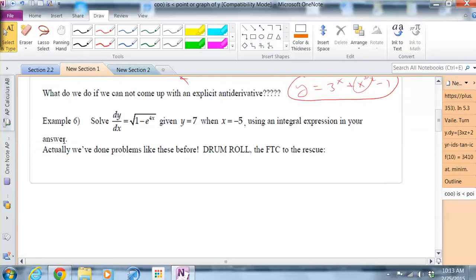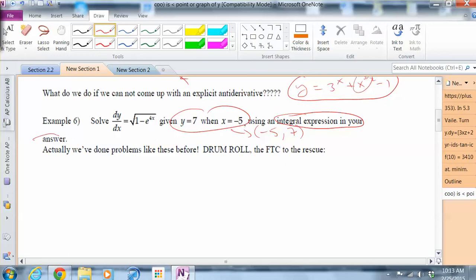Now what if we cannot come up with an explicit antiderivative? So here we have dy/dx equals root 1 minus e to the 4x. That seems kind of weird. The square root of 1 minus e to the 4x. So we do have initial value here, that's negative 5 comma 7. But here's what I'm going to do for you to help you figure this out. Let's use an integral expression in our answer.